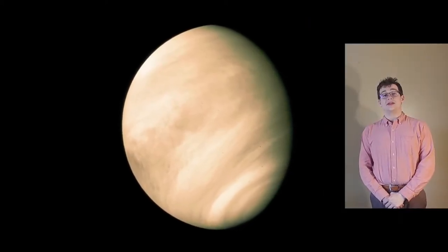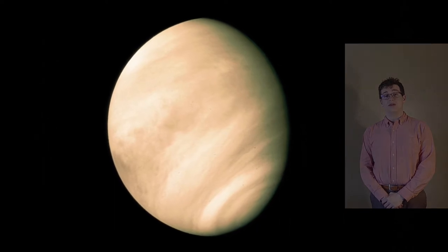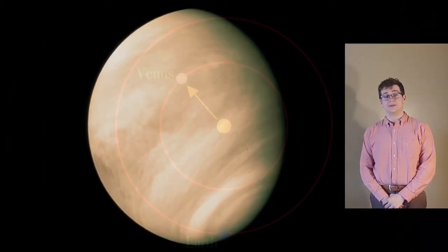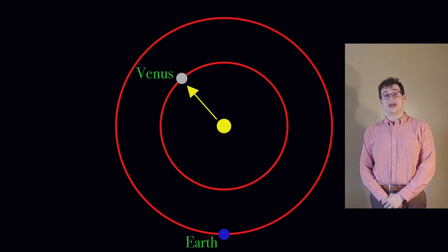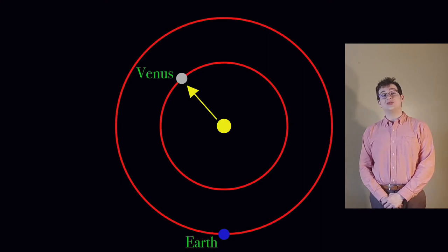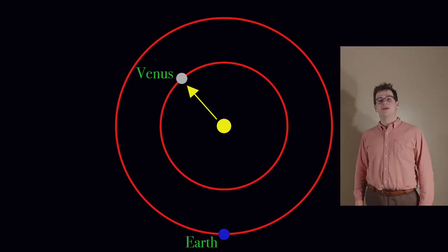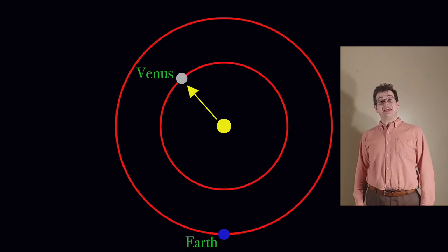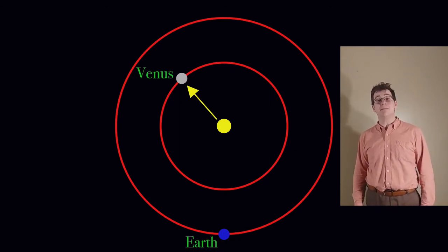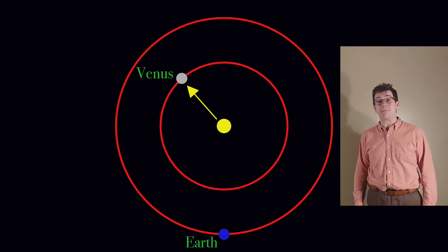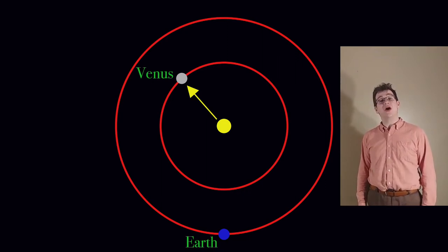Venus is named after the Roman goddess of love and beauty. It is the second planet in our solar system. The planet is about 0.7 astronomical units away from the Sun. An astronomical unit is the average distance between the Earth and the Sun, and it's roughly about 93 million miles, or 150 million kilometers. With a little math, we can see that Venus is about 65 million miles, or about 105 million kilometers, away from the Sun.